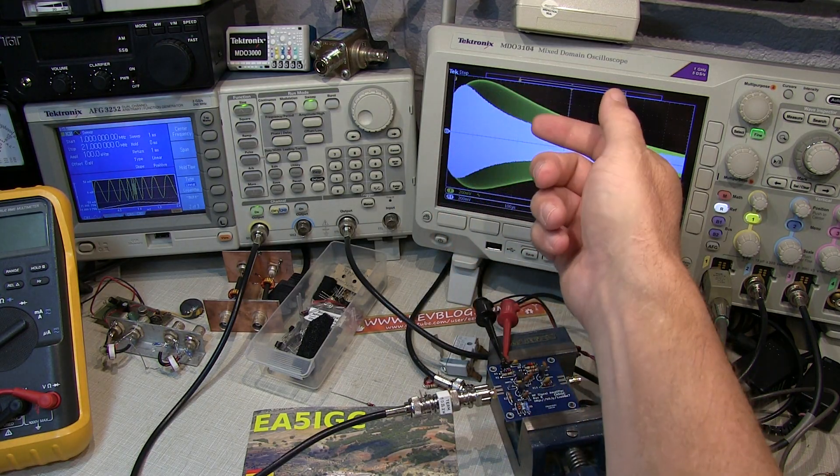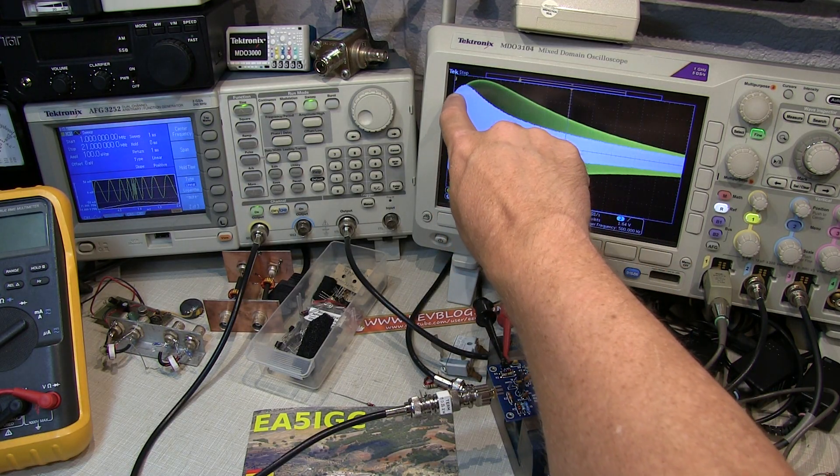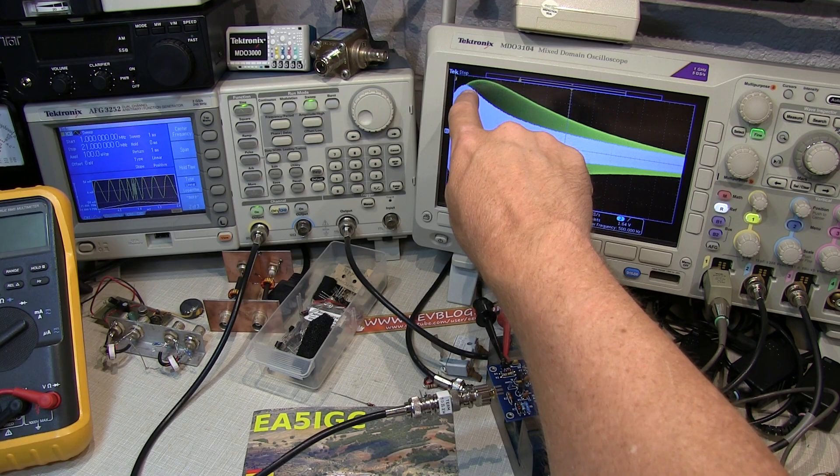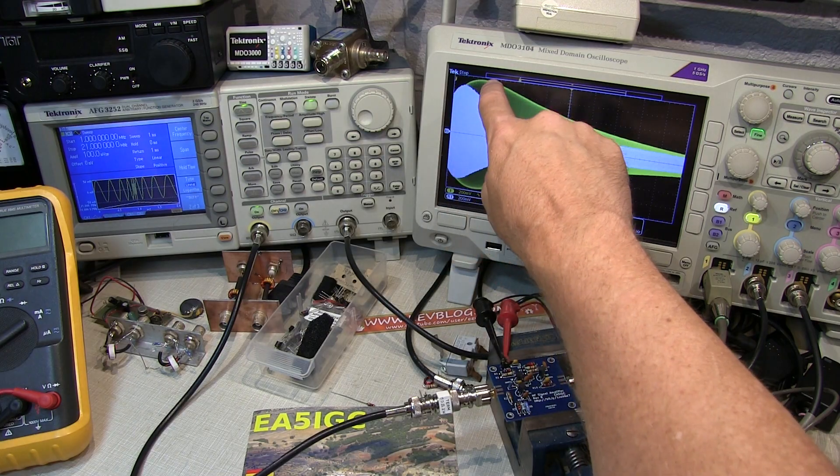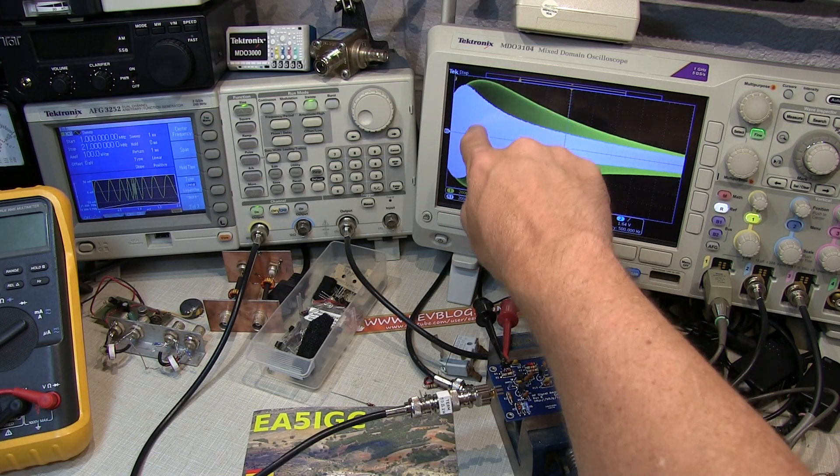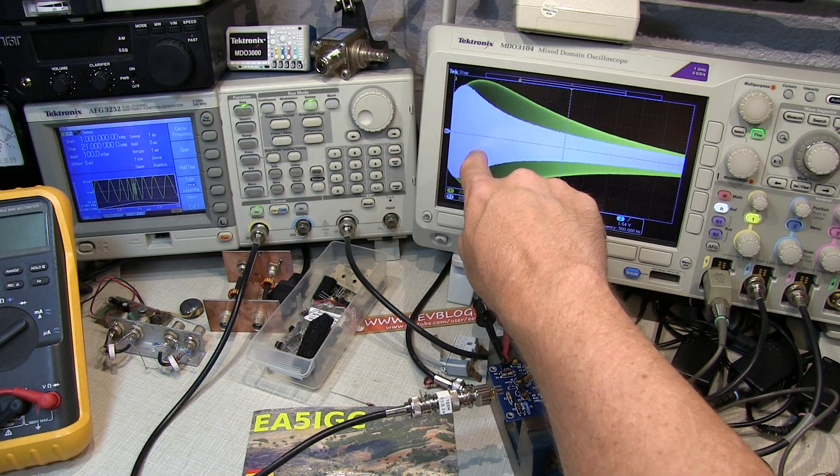With the Miller effect reduced, we can now see the gain is continuing to come up and is peaking somewhere around 4 MHz or so. So we've got a little bit more gain certainly past just the common emitter amplifier alone.